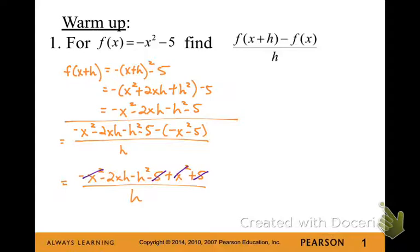So your x squared will subtract out and so will the fives. Lastly, you can divide h out of each numerator and denominator term. And that will leave you with negative 2x minus h, and then just giving the domain stipulation that h cannot equal 0.